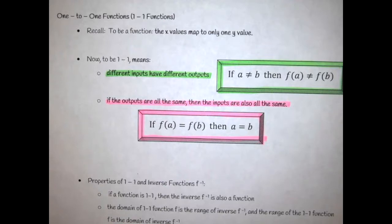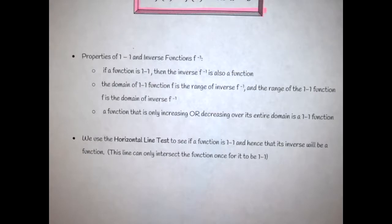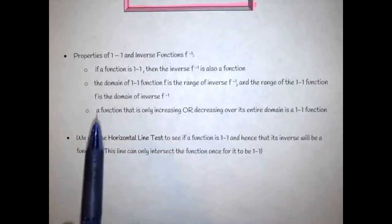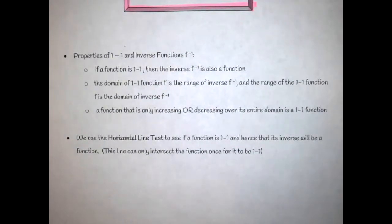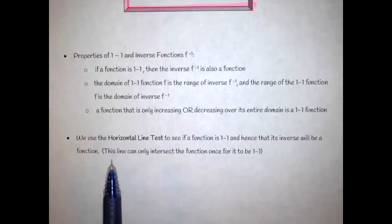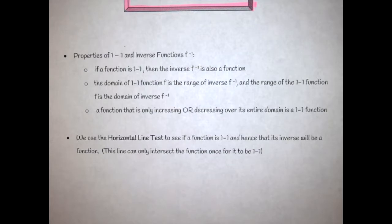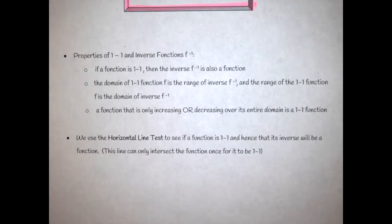Along with that, there are some properties. If a function is one-to-one, then the inverse is a function. The domain of a one-to-one function is the range of the inverse, and the range of the one-to-one function is the domain of the inverse — we're still thinking in terms of opposites. Additionally, a function that is only increasing or only decreasing over its entire domain is a one-to-one function.